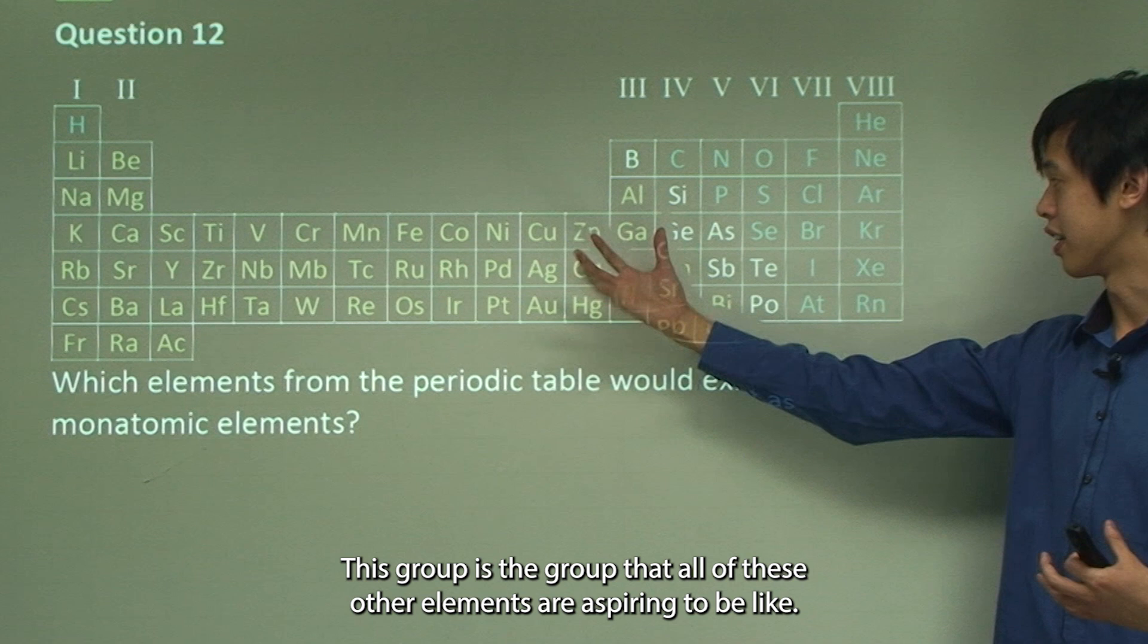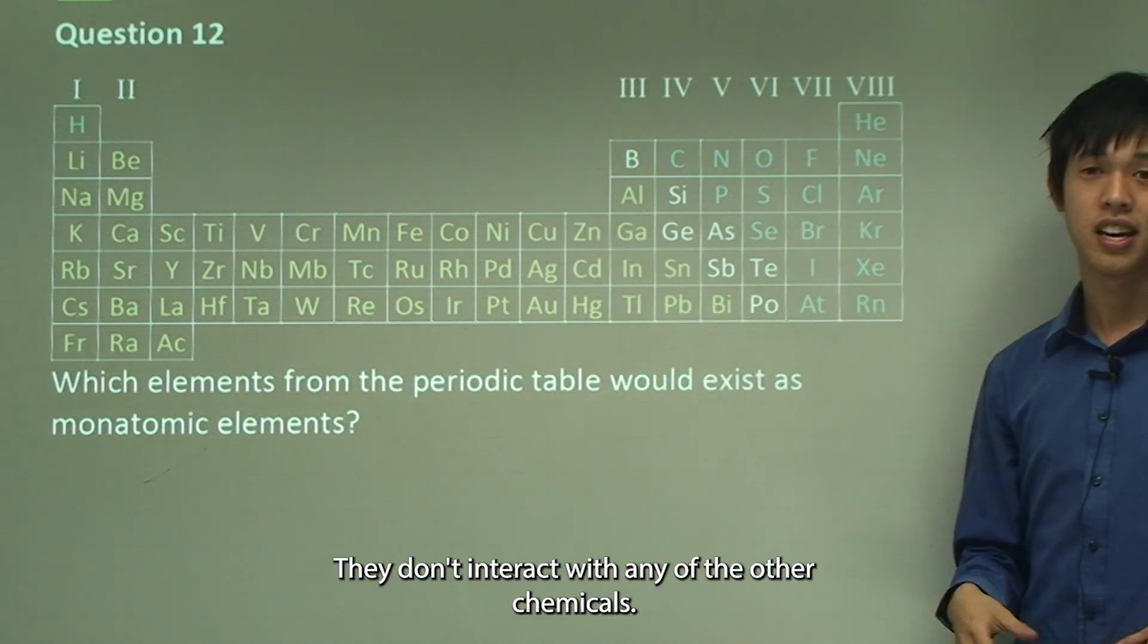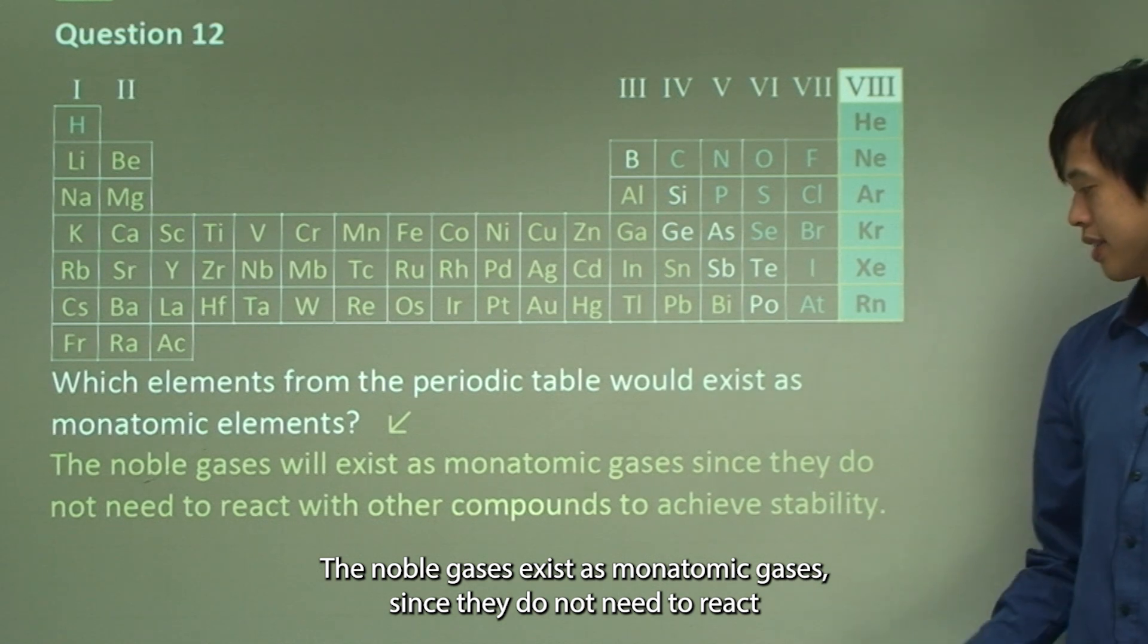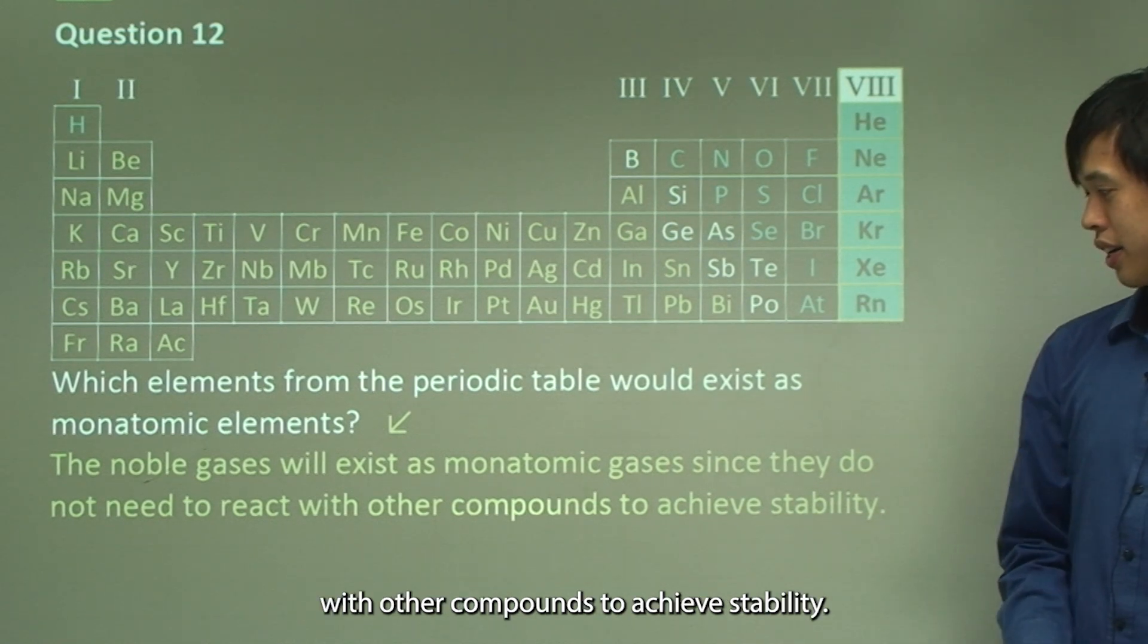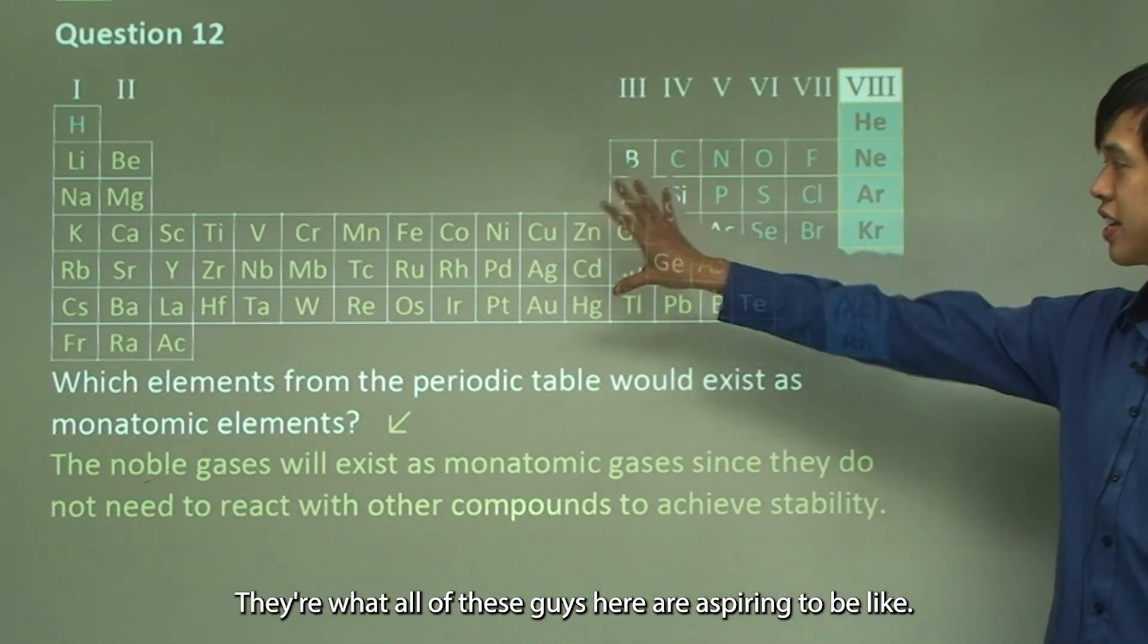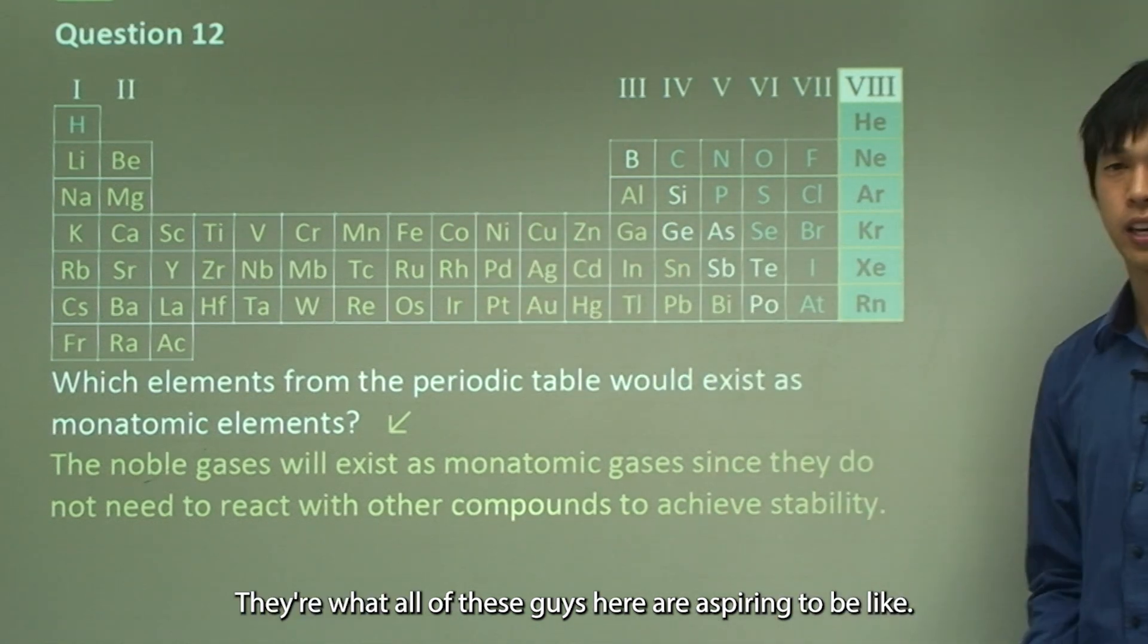This group is the group that all of these other elements are aspiring to be like. They don't interact with any of the other chemicals. The noble gases exist as monatomic gases since they do not need to react with other compounds to achieve stability. So these guys are stable, they're what all of these guys here are aspiring to be like.